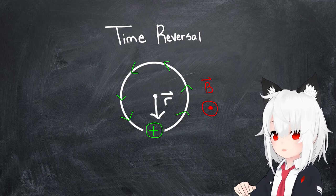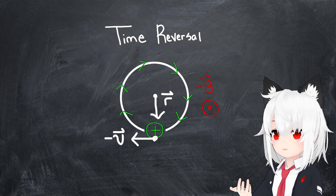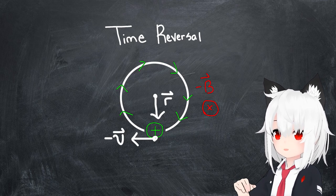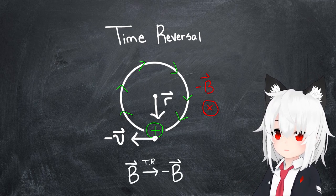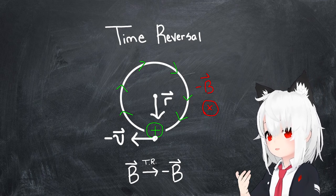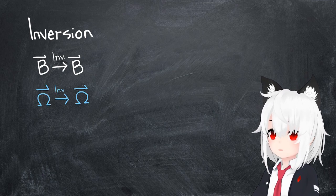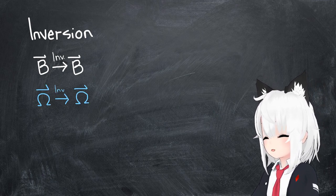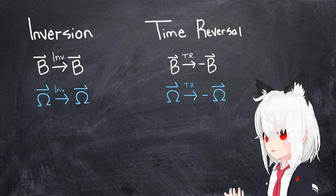This results in a corresponding change in the direction of the magnetic field, again according to the right-hand rule. So while the magnetic field, and by analogy the Berry curvature, remains invariant under an inversion transformation, it apparently changes sign under a time reversal operation.